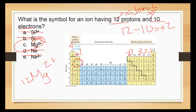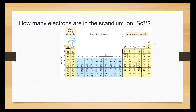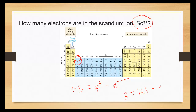How many electrons are in the scandium ion, Sc, 3 plus? Scandium is on the periodic table. We know the charge is plus 3, the charge equals protons minus electrons, and the atomic number gives us 21 protons. So 3 equals 21 minus the electrons — therefore 21 minus 3 gives us 18 electrons.